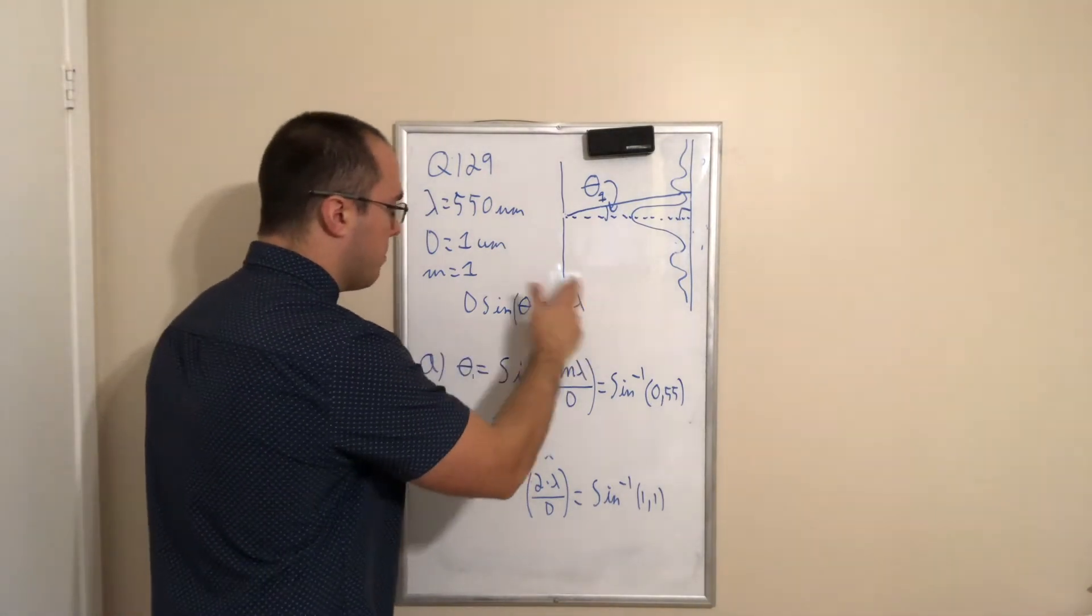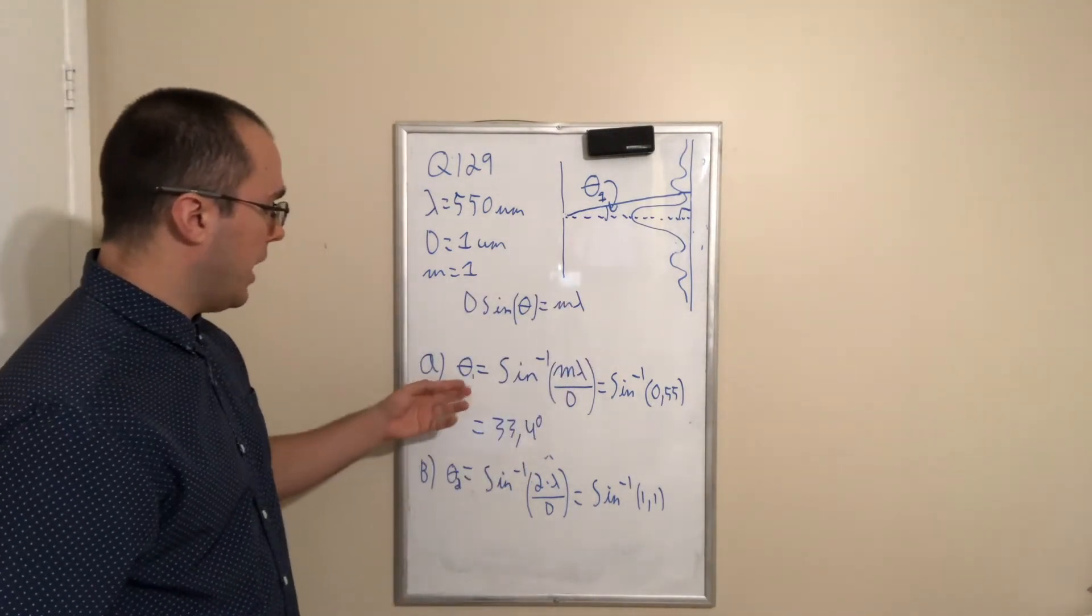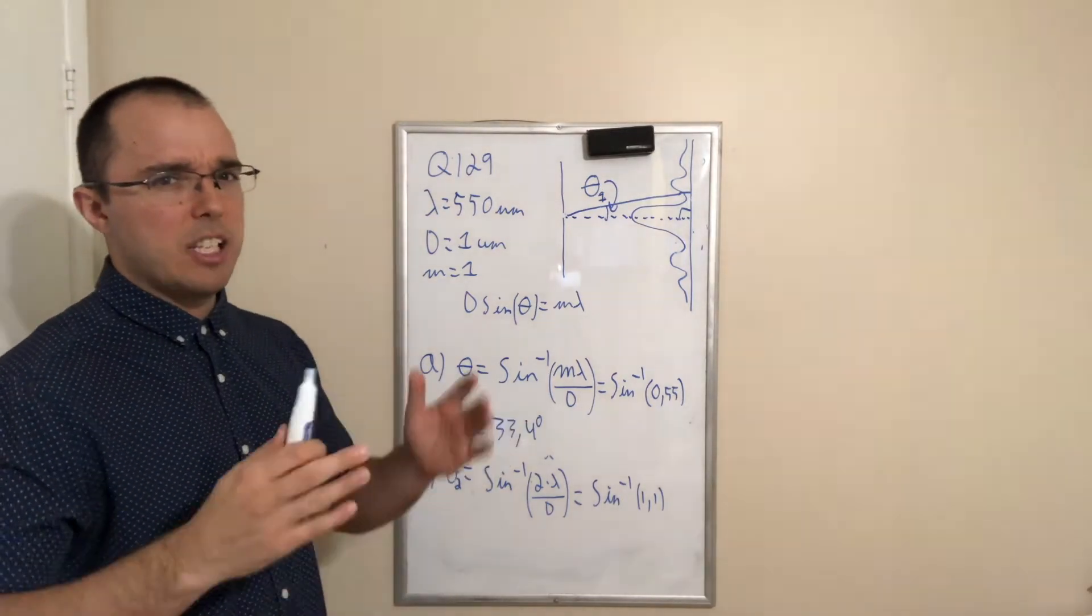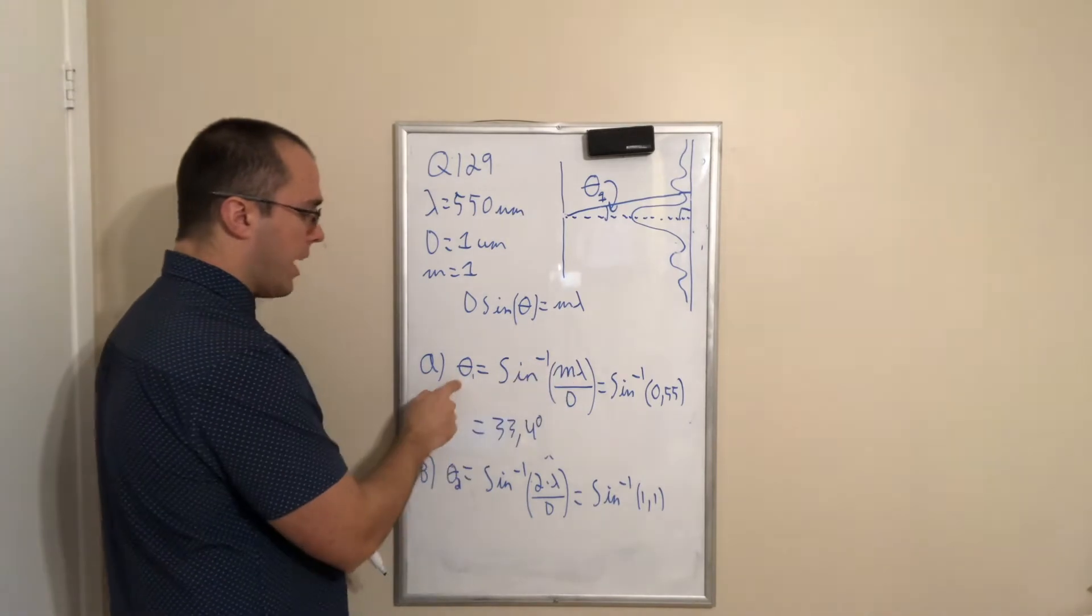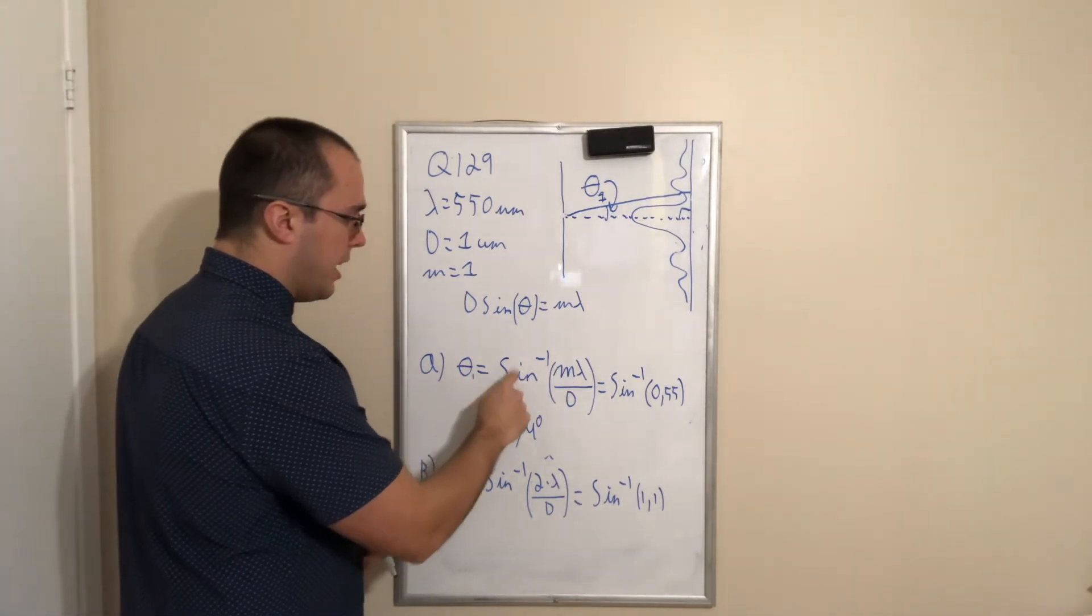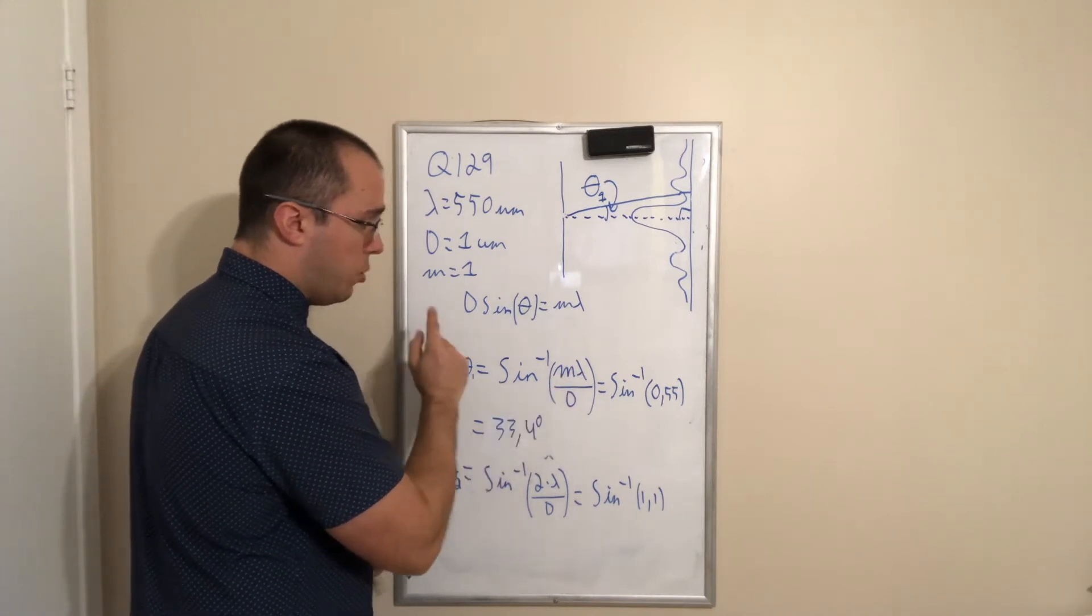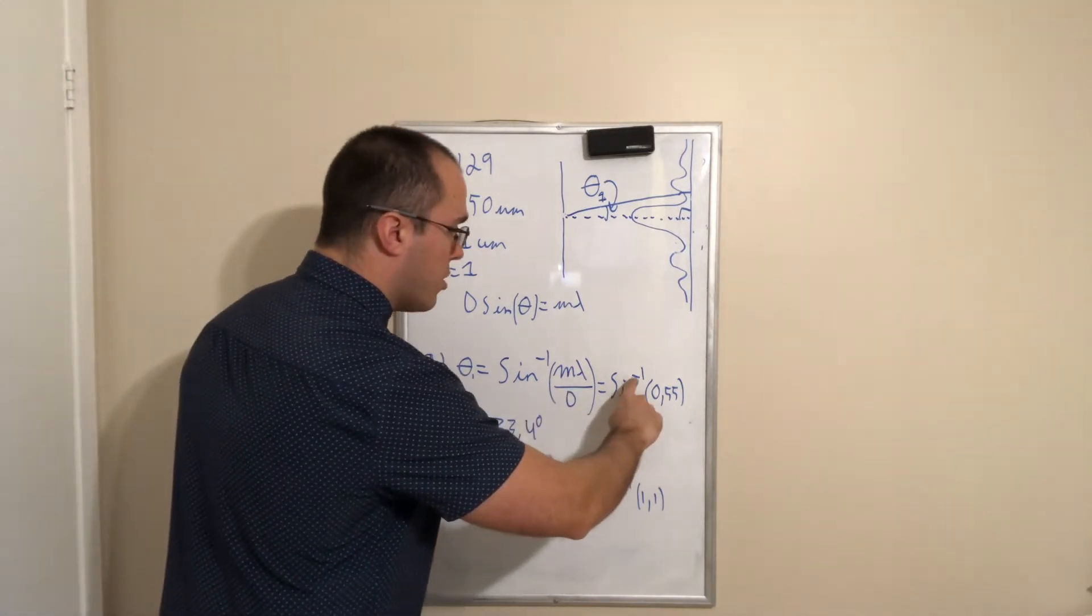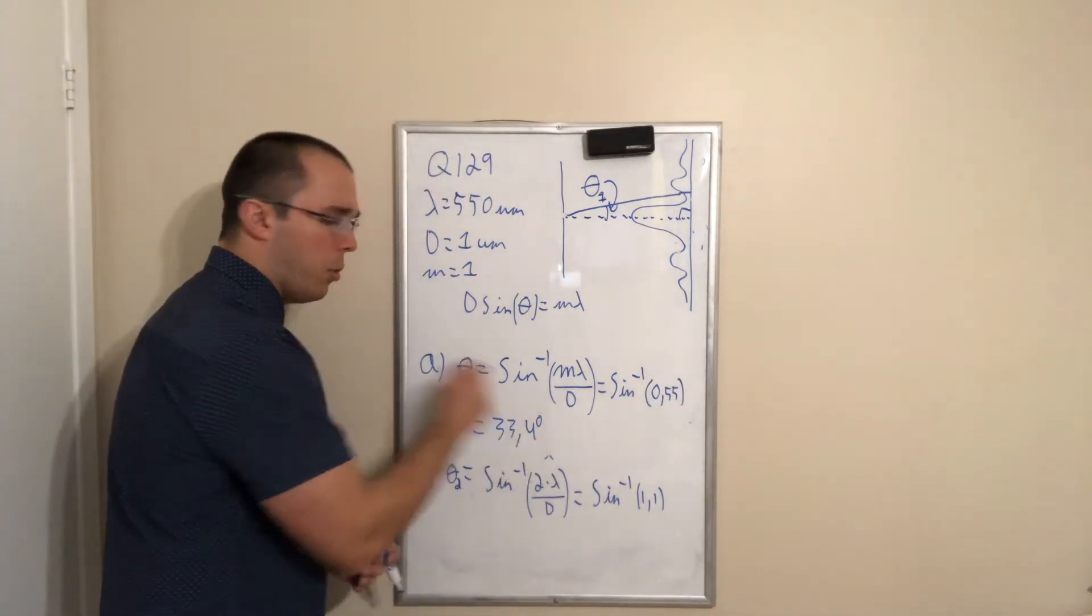So we're going to use again this formula to find a minimum. We're simply looking at the angle and we got everything else. So at this point, it's simply algebra. We will use the inverse sine function to extract the angle. So we got sine inverse of m multiplied by lambda divided by the width. m is equal to 1, and we'll get sine inverse of 0.55, and we get 33.4 degrees.